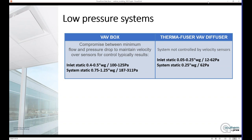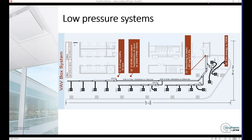However, with the Thermafuser diffuser approach, if you're looking at an all-low-pressure system, it's not being controlled by velocity sensors. There is pressure control in the system, but that is done by static pressure, which can be measured much easier and much lower. So now we're looking at inlet statics of anywhere from 0.05 to 0.25. In this part of the system, we're not looking at a pressure higher than 0.25. So now we've got a system static of 0.25 compared to a system static with a box of anywhere from three-quarter to 1.25 inches.